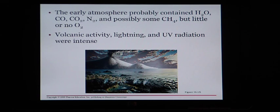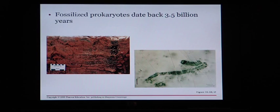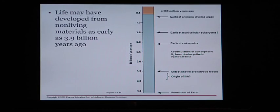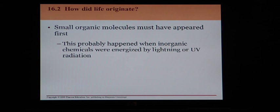Scientists believe that the combination of those gases along with volcanic activity, lightning, and ultraviolet radiation may have mixed together to create what we know as life. Fossilized prokaryotes date back as far as 3.5 billion years ago, and life may have developed from non-living materials as early as 3.9 billion years ago. Small organic molecules — things like monosaccharides, proteins, nucleic acids, and lipids — appeared first, and then possibly grouped together to begin forming cells, energized by lightning or ultraviolet radiation.